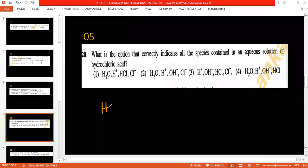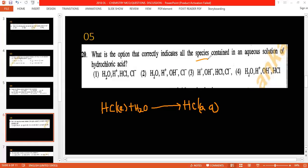The question says what is the option that correctly indicates what species are contained in aqueous solution of hydrochloric acid. Hydrochloric acid, this is HCl. HCl is in liquid, when it dissolves in water it will be hydrochloric acid aqueous, which means this is water solution. So this hydrochloric acid, what are the species here? Hydrochloric acid aqueous contain HCl aqueous and water.